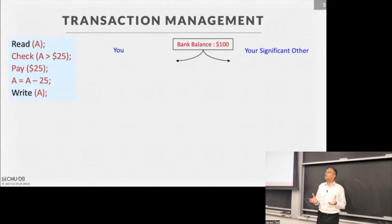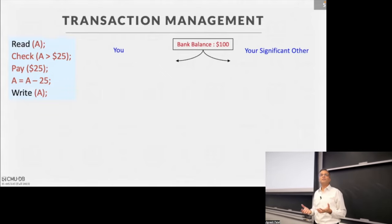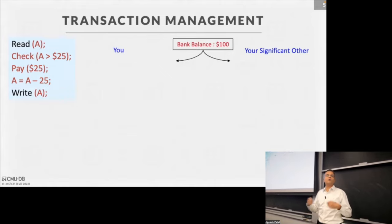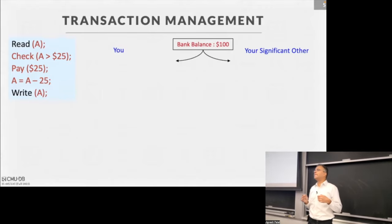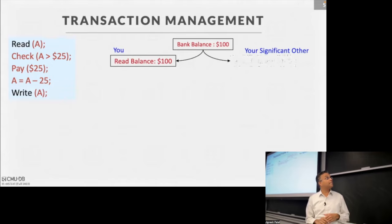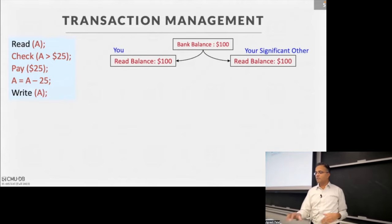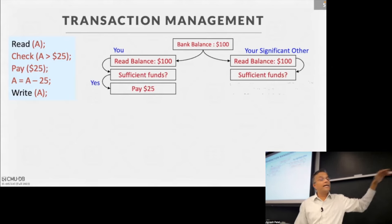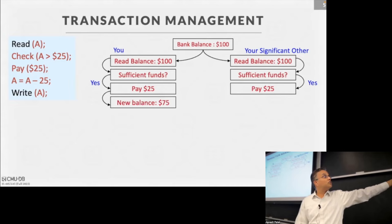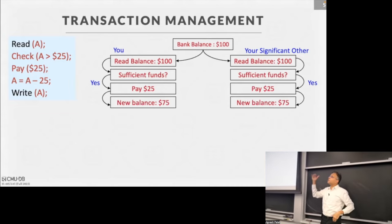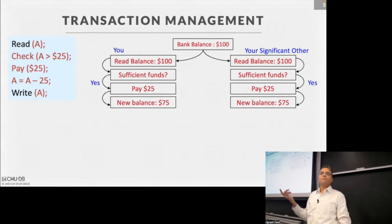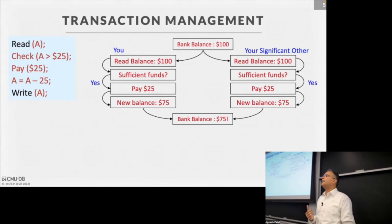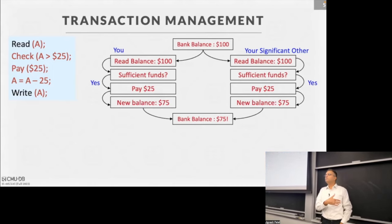Here's a different scenario showing a different type of problem — concurrent actions. Imagine you and your significant other both share a bank account, both go to separate ATMs simultaneously, and both run this transaction to withdraw $25. Sufficient balance is checked on both sides. Both get paid $25. But because both read the original bank balance of $100, both calculate the new balance as $75. The first one writes, the second overwrites, and now the bank is short $25.